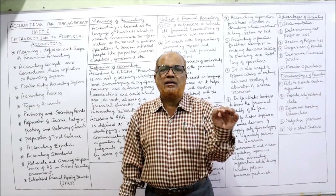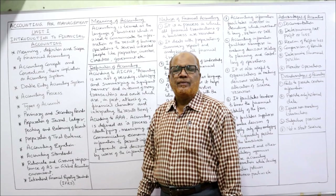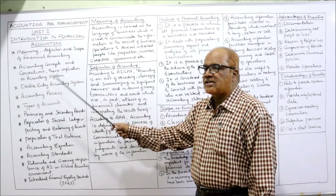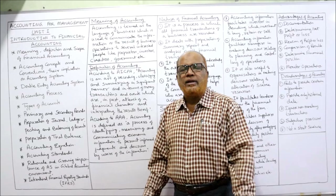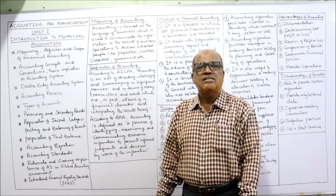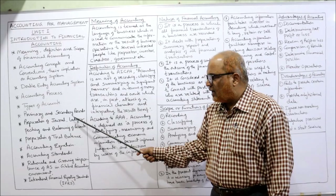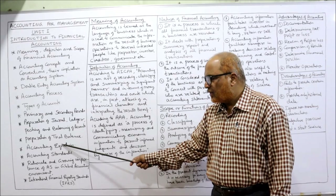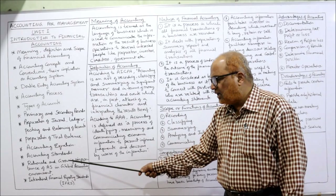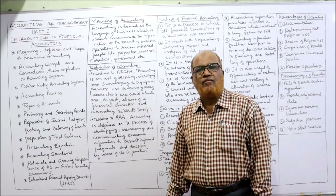In this unit I'm going to cover: meaning, definition and scope of financial accounting; accounting concepts and conventions and their implication on the accounting system; double entry system of bookkeeping; accounting process, types of accounts, primary and secondary records; preparation of journal, ledger posting and balancing; trial balance; accounting equation; accounting standards; and international financial reporting standards — IFRS.